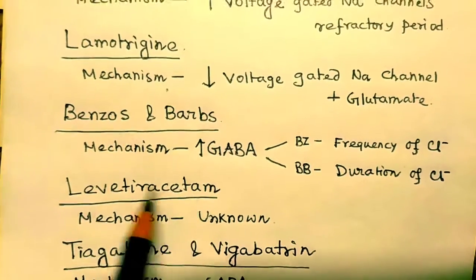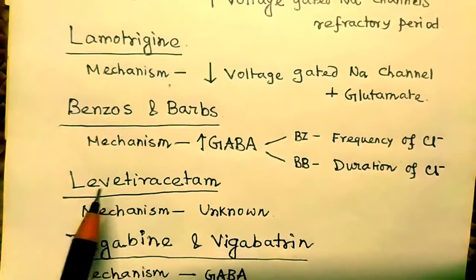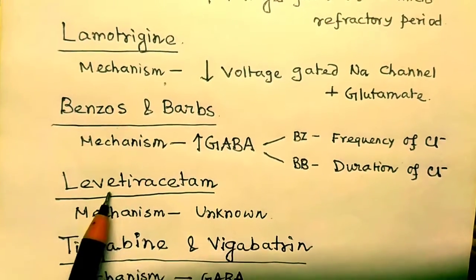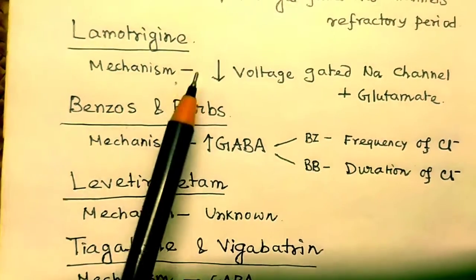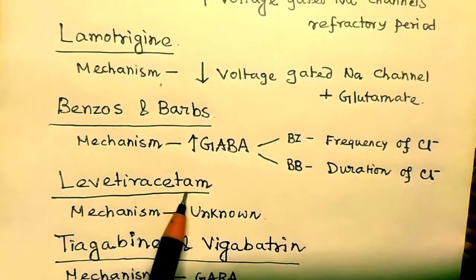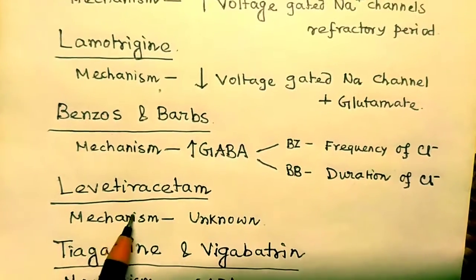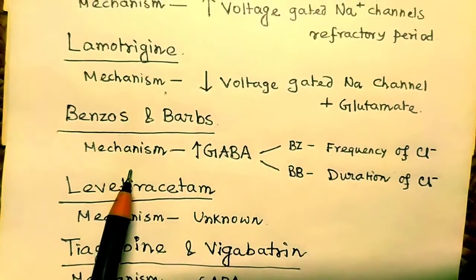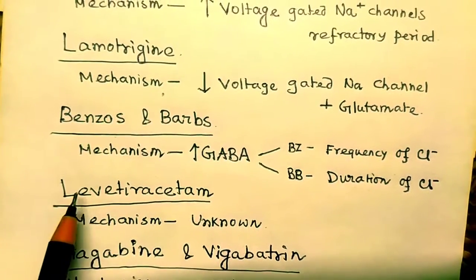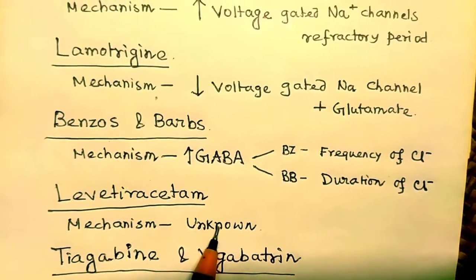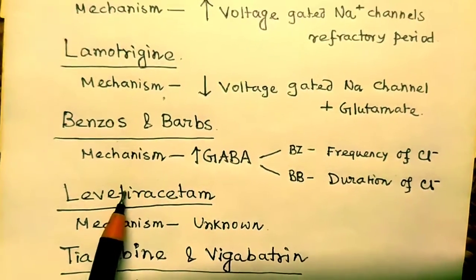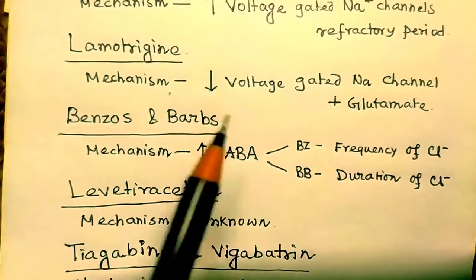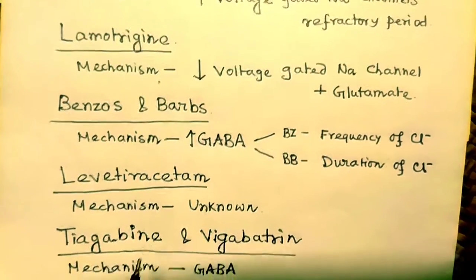The next one is levetiracetam. To remember levetiracetam, think of a magician doing a levitation act — something goes up magically. Just as we don't know how the magician does the levitation, the mechanism of levetiracetam is unknown. So remember: levetiracetam — unknown mechanism, like levitation magic.